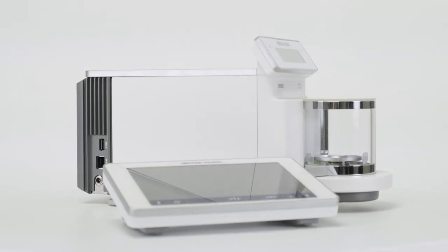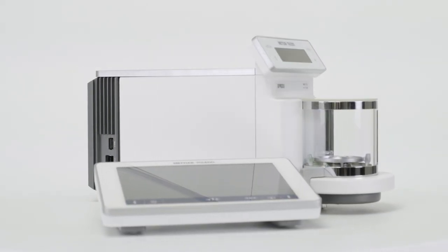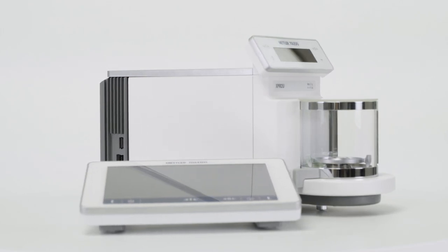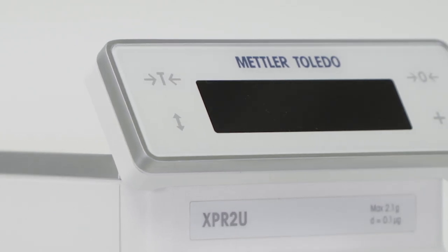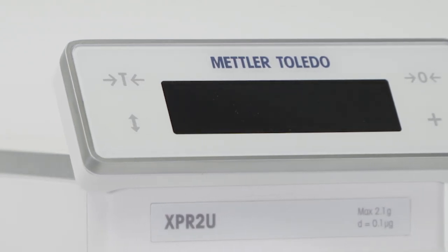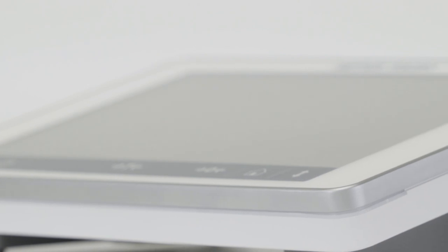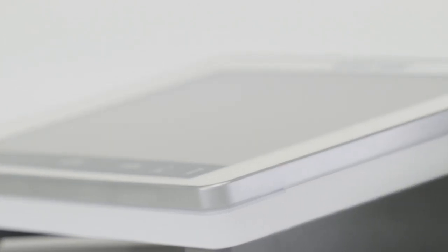Mettler Toledo Excellence Level Microbalances offer unmatched accuracy and high comfort for handling large numbers of very small samples. The convenient SmartView terminal helps during the delicate weighing in process and the main terminal can be placed away from the balance to save space in your fume cupboard.